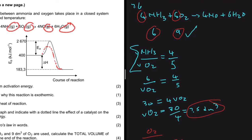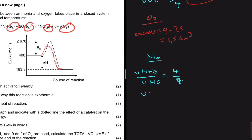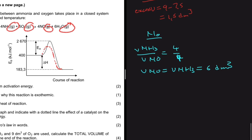To find the volume of the products, we use the mole ratio. For NO: volume of NH3 divided by volume of NO equals 4 divided by 4, so their volumes are equal. The volume of NO equals the volume of NH3, which is 6 dm³.